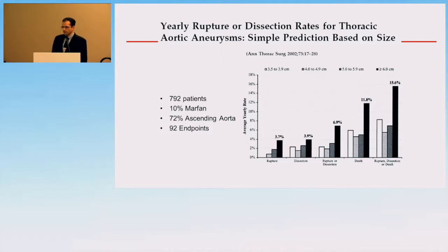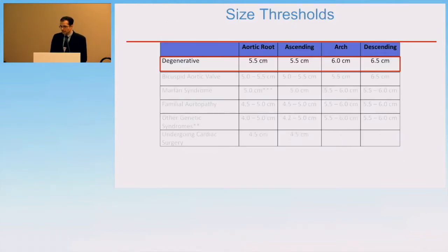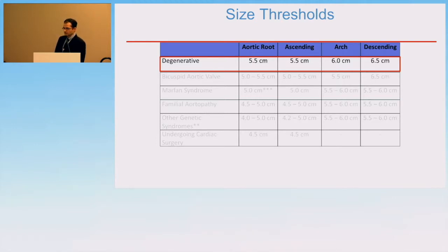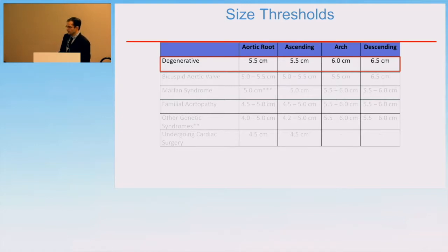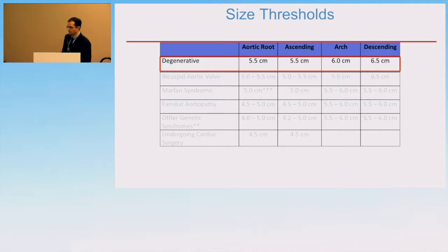The Yale cohort is close to 800 patients in whom natural history risk was studied. About 10% were Marfan's, and about three-quarters had primarily ascending aortic disease, with 92 events occurring in the cohort. Their recommendation, which has driven surgical treatment over the past three to four decades, is that for degenerative aortic aneurysms in the ascending aorta, the threshold should be 5.5 centimeters, as there tends to be an inflection point of risk beyond that. For the same pathology in the arch or descending thoracic aorta, given higher intervention risks, the threshold was higher at 6 to 6.5 centimeters.